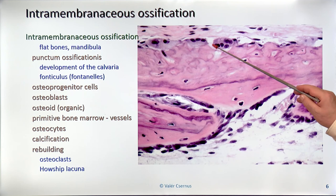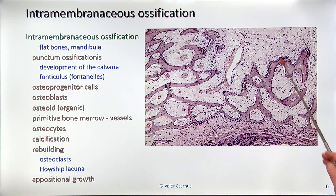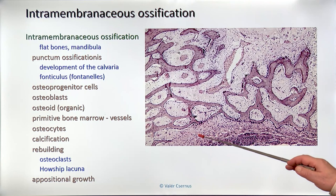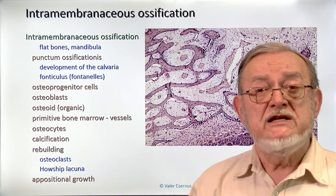Some examiners may ask about the Howship's lacuna — the area around the osteoclasts where bone is dissolved. The mechanism of appositional growth was described in detail in the previous lecture on cartilages, and the same principle also applies to intramembranous ossification. Next lecture, I will continue with intracartilaginous ossification and some general ideas on how bone grows.